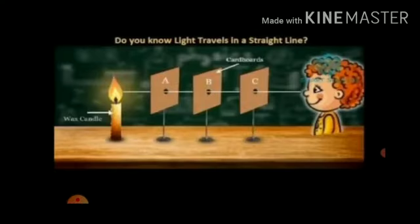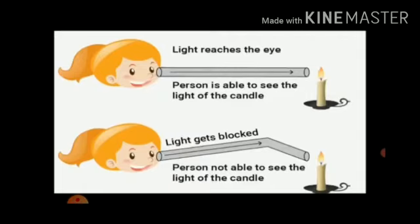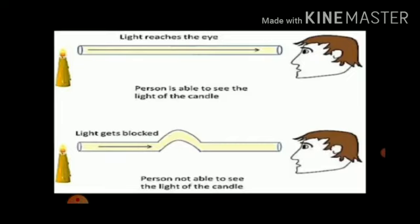Now let us see another activity. Take a straw and a burning candle with a stand and try to see the flame of the candle from the other side of the straw. You can see the light. But if you bend the straw and then try to see the flame, the light gets blocked and you will not be able to see the flame of the candle.